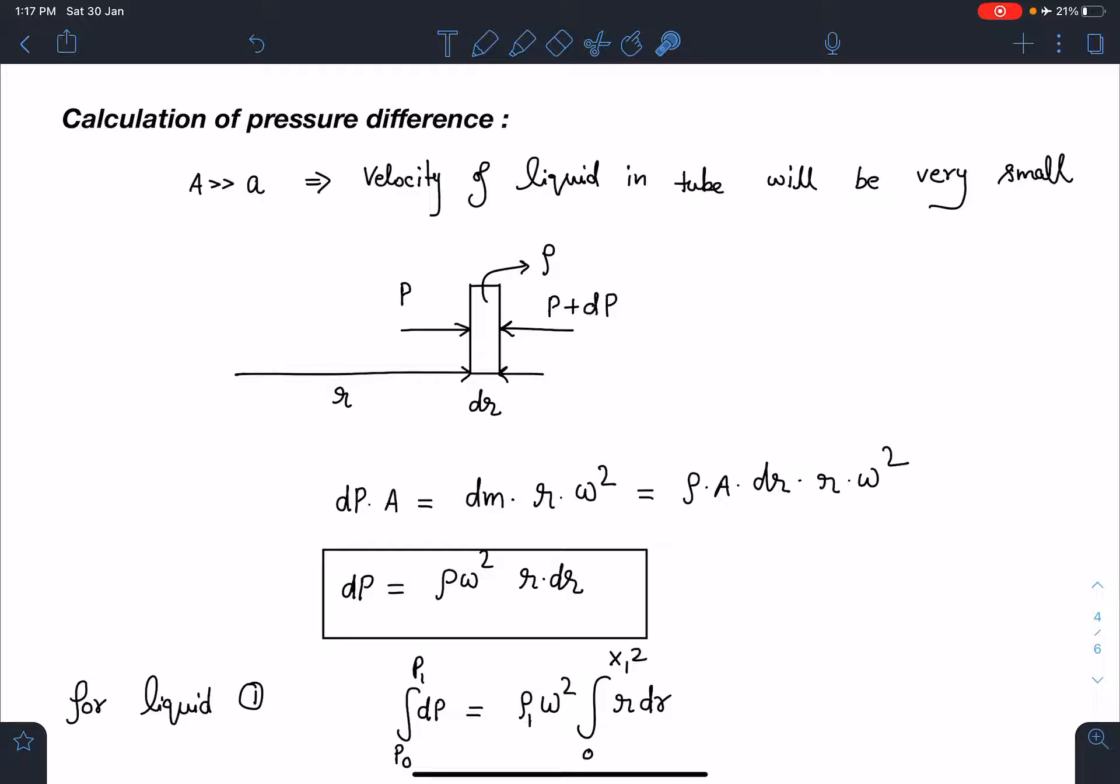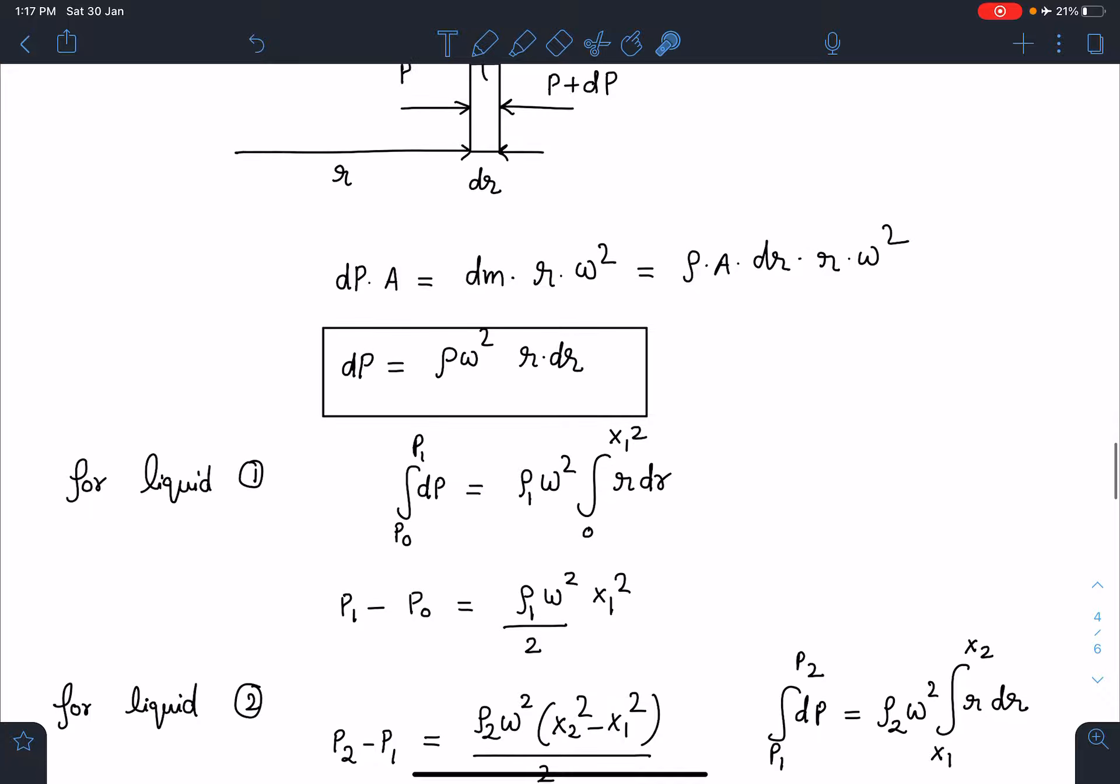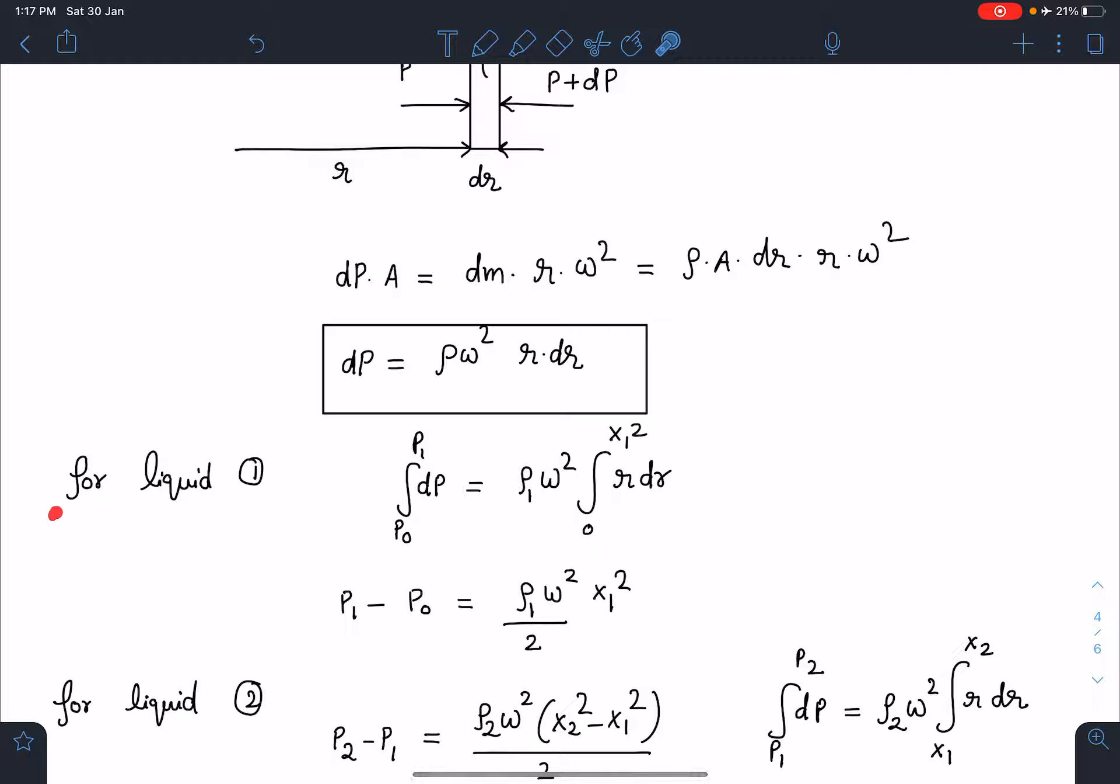When a and a gets cancelled dp is rho omega square r dr. When I integrate this part for first liquid I am going to integrate pressure on the axis is p0 when r is 0 and pressure at the last interface is p1 and that distance is x1. So, when I simplify I am going to get p1 minus p0 equals rho1 omega square x1 square by 2.